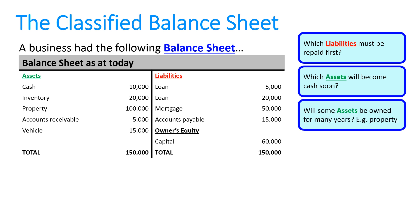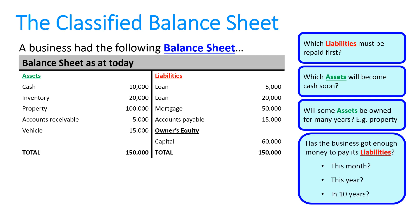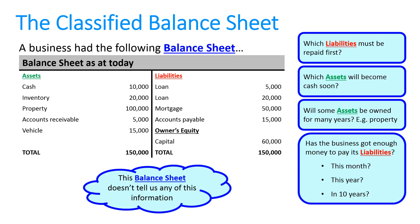Will some assets be owned for many years, like the property? And lastly, have we got enough money to pay our liabilities — maybe this month, this year, or in 10 years? I don't know the asset and liability time frame, so I can't answer that question. So this balance sheet, whilst it's good, it doesn't tell us any of this information.